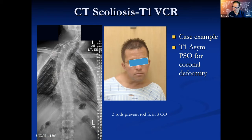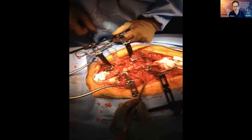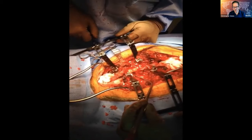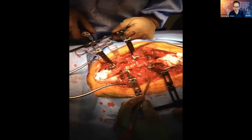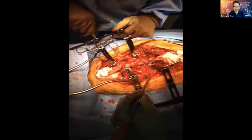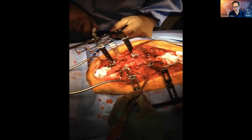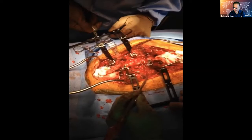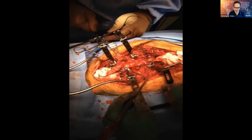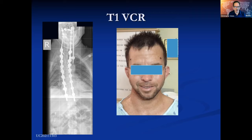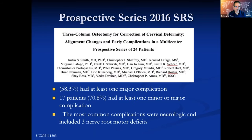For cervical thoracic scoliosis, asymmetric PSO can be very helpful — like in this patient with a torticollis-type deformity. We use the racks and can close one side more than the other. We hold one side rigid and close one side to correct the patient sagittally, then keep closing one side while holding the other side rigid, and can get a nice correction of the coronal plane deformity.